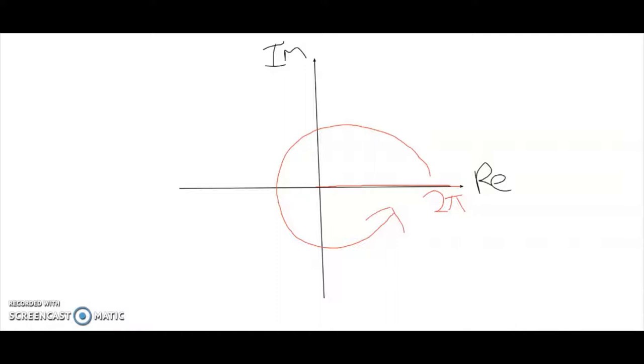So for example, if we have a complex number here, the argument of that complex number will be the angle it makes from the horizontal until we reach there, which is half of 2π, which is simply π.